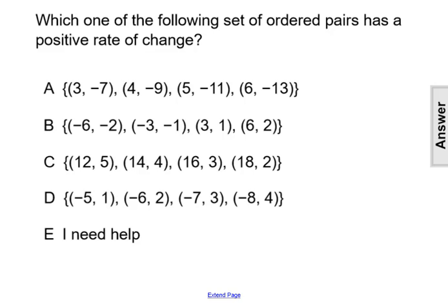Let's take a look at each set. Set A has x values going from 3 to 4 to 5 to 6—the x values are increasing. The y values go from negative 7 to negative 9 to negative 11 to negative 13—those values are decreasing. Since we have a difference in movement, that indicates a negative slope and negative rate of change.